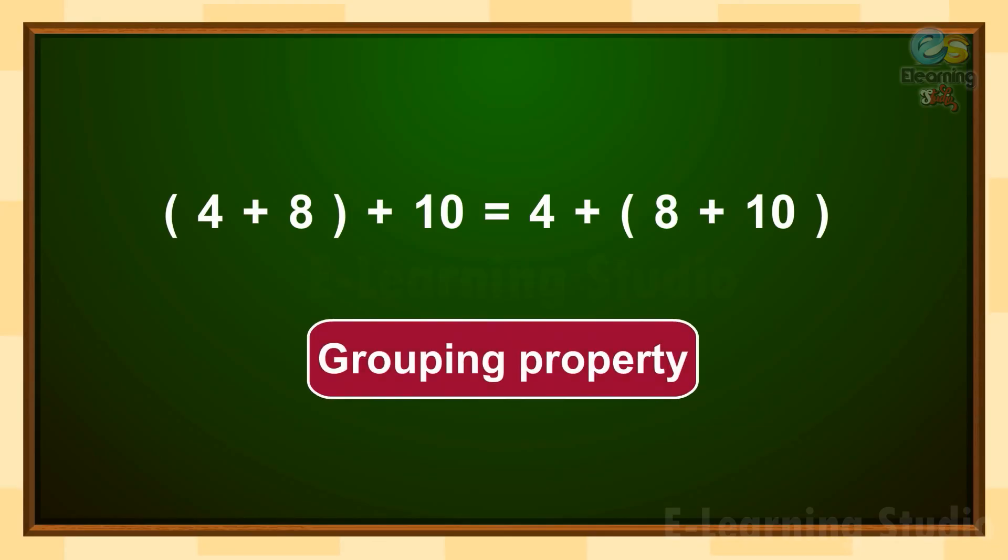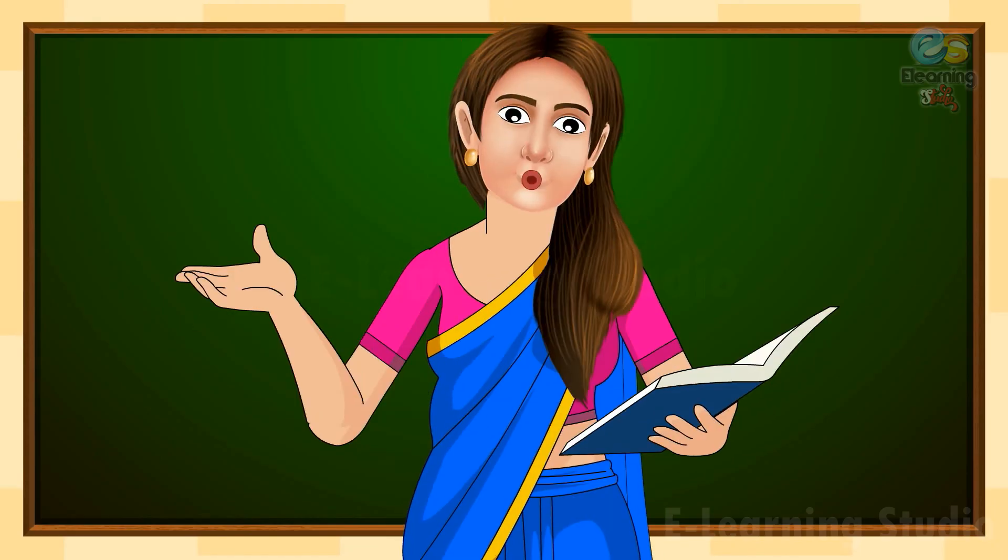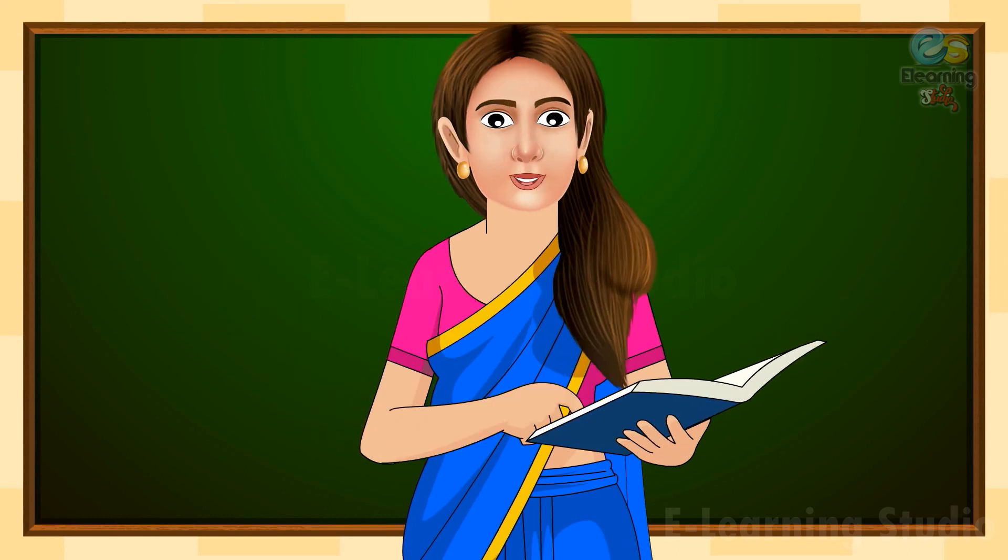Third one is parenthesis 4 plus 8 parenthesis plus 10 is equal to 4 plus parenthesis 8 plus 10 parenthesis. What do you think? Which property is used here? Yes, if you say Grouping Property of addition, then kids, you are absolutely correct. Well done, because it is the only property that has a parenthesis.